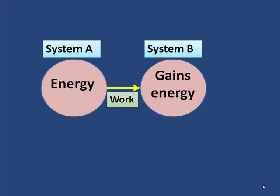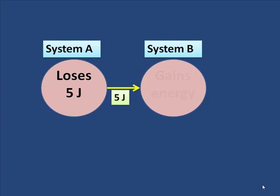Let's pretend that we have some real numbers here. Suppose there was five joules of work done. Well, that would mean that system A lost five joules of energy, and system B gained the five joules of energy.